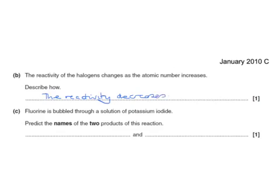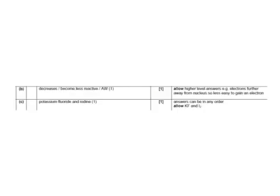Fluorine is bubbled through a solution of potassium iodide. Predict the names of the two products. This is a displacement reaction: fluorine plus potassium iodide gives iodine plus potassium fluoride. This happens because fluorine is more reactive than iodine, and so it displaces iodine from a solution of potassium iodide. So reactivity decreases down the group, and we get potassium fluoride and iodine.